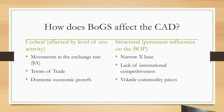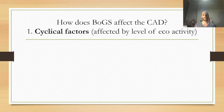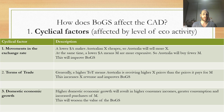So how does the balance on goods and services affect the CAD? First are cyclical factors. Number one: movements in the exchange rate. If the Australian dollar depreciates, it makes exports cheaper, so Australia will sell more exports. At the same time, a lower Australian dollar means imports are more expensive, so Australia will buy fewer imports. Higher export revenue and lower import costs will improve BOGS and improve the current account deficit.